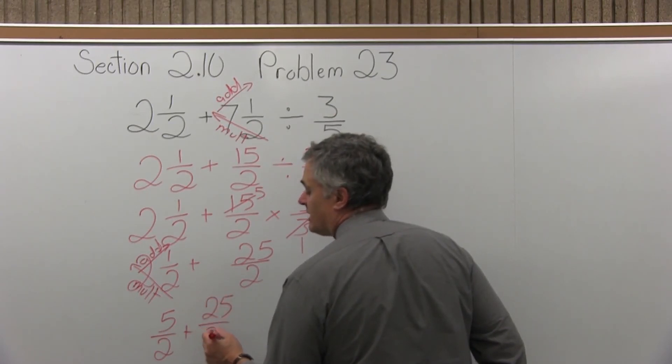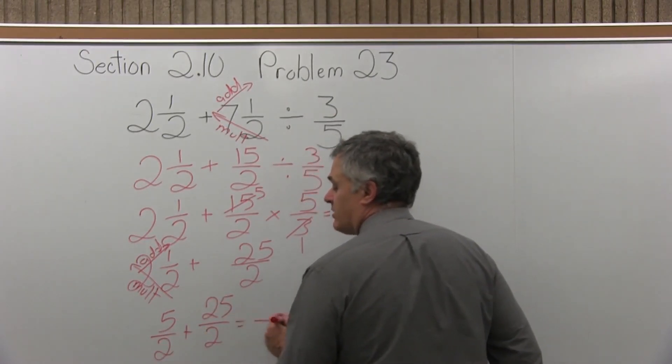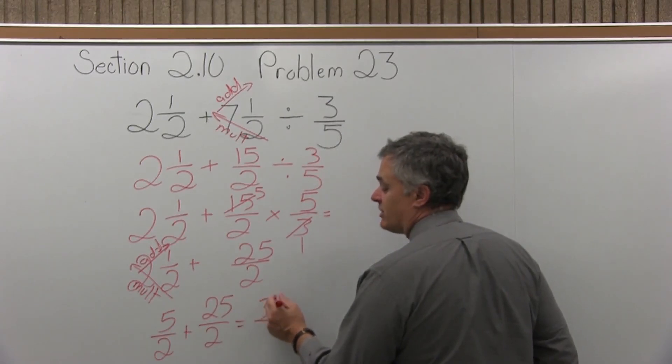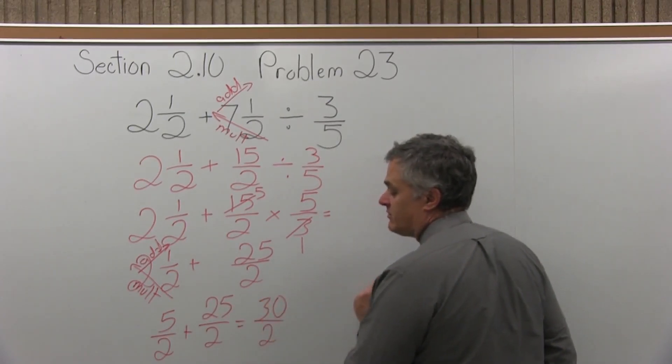And I already have a common denominator of two. So now with my common denominator, five plus twenty-five is thirty. And it's over a denominator of two.